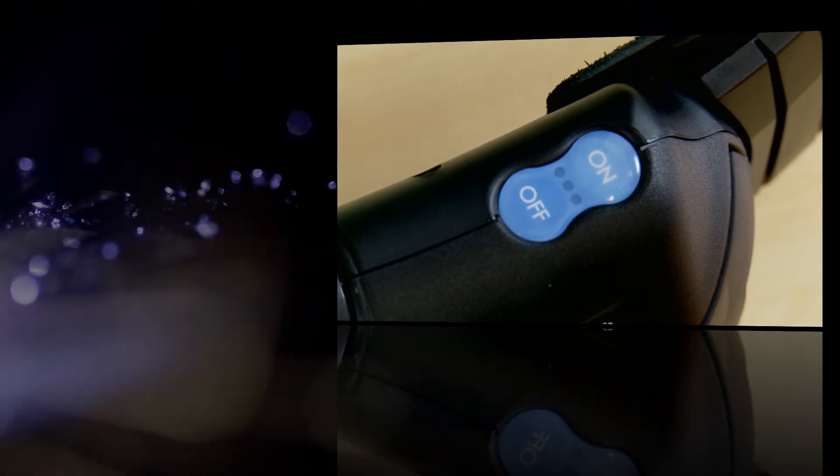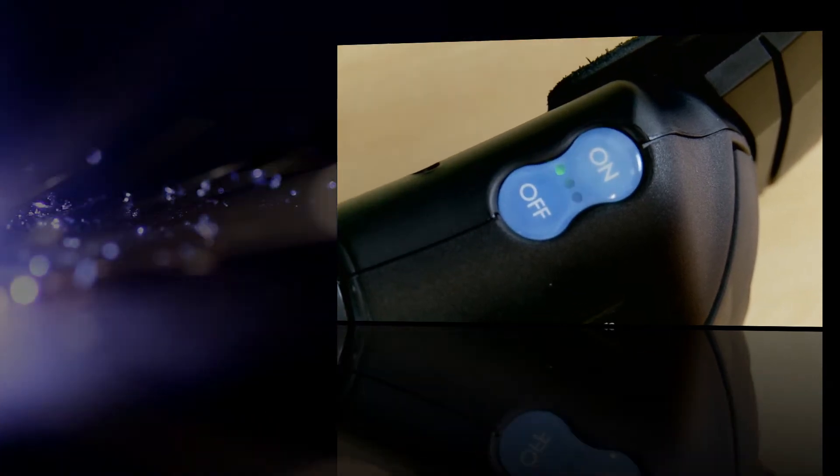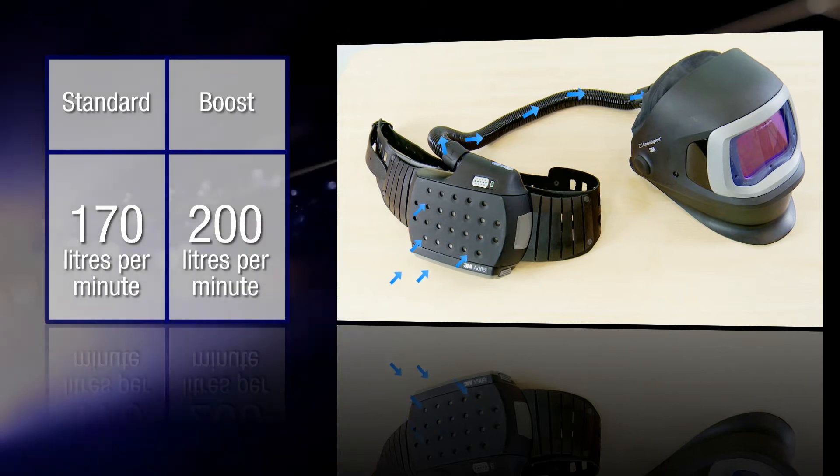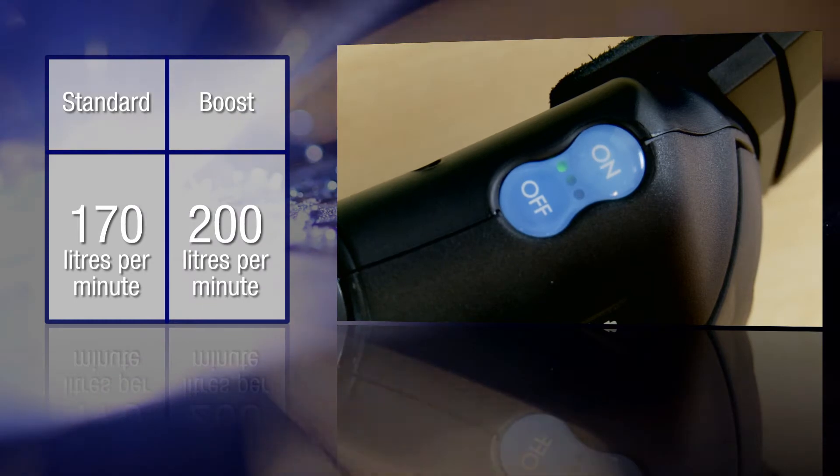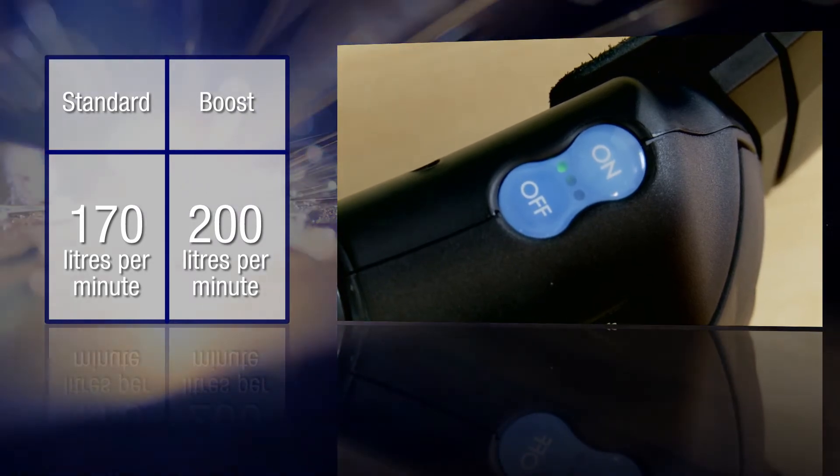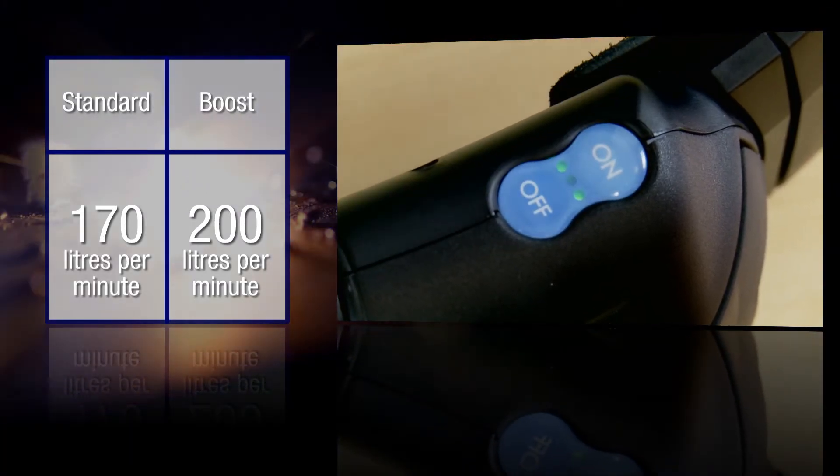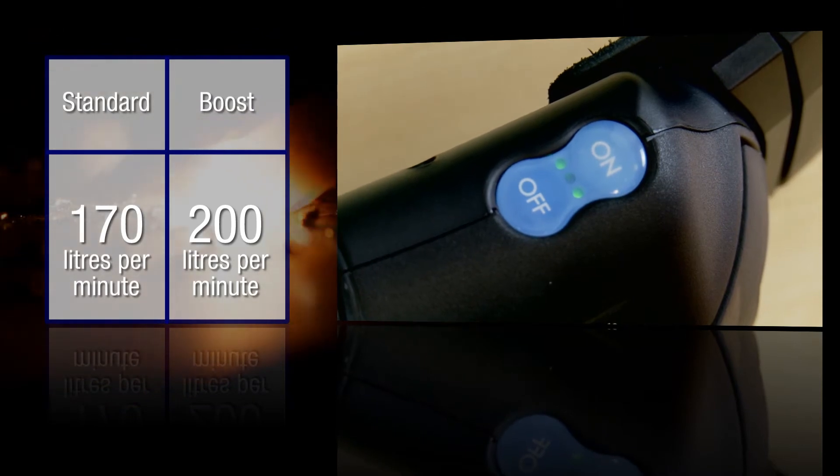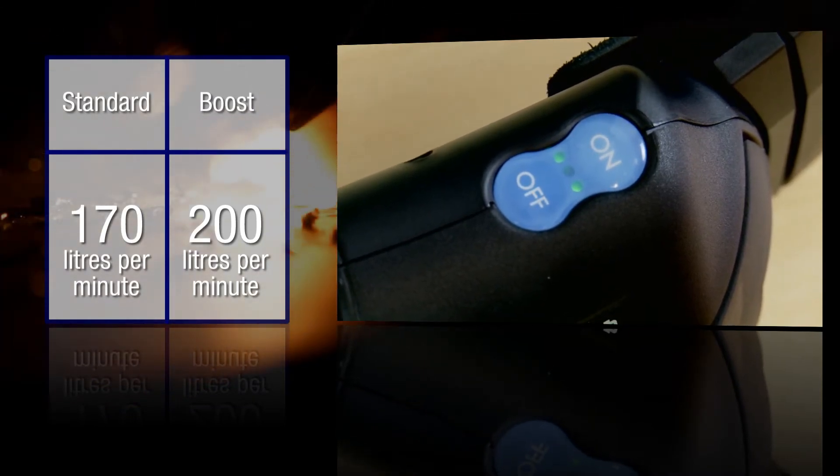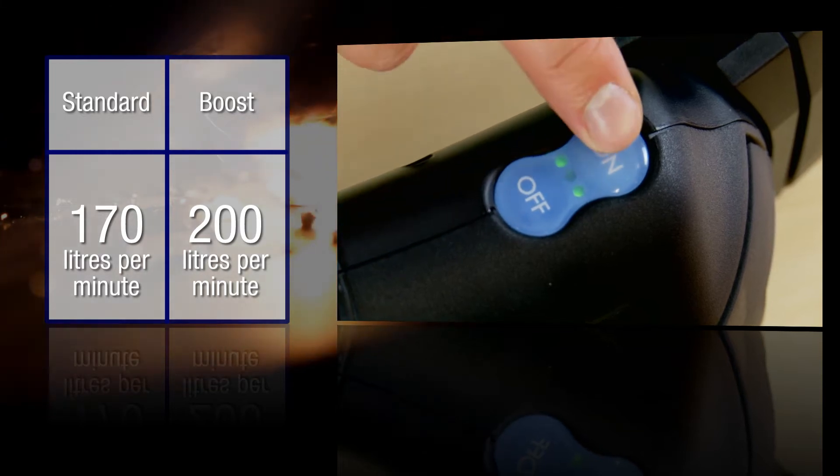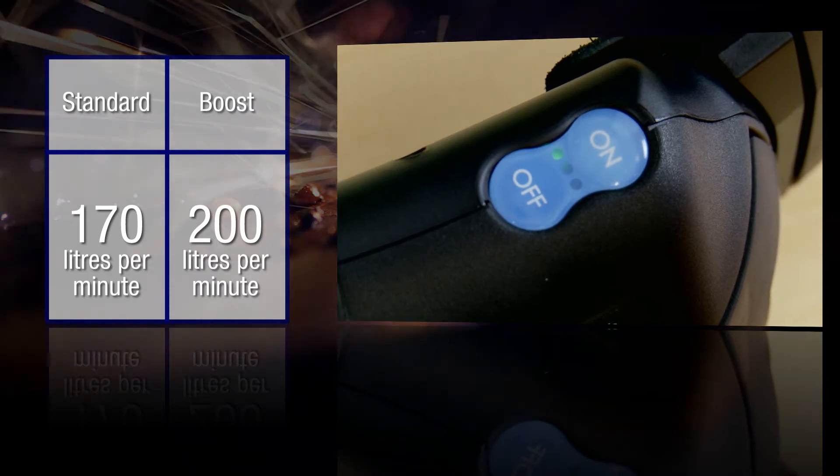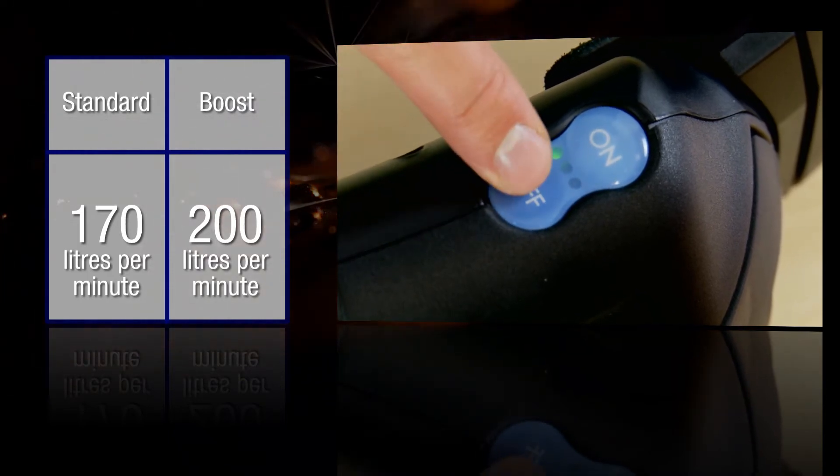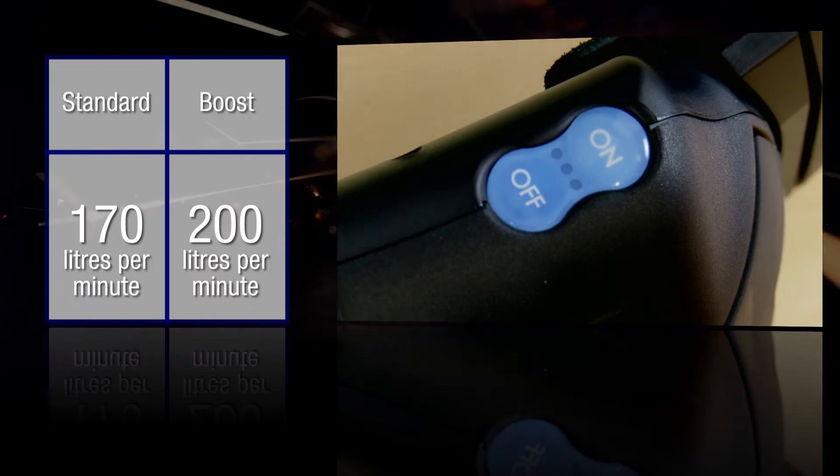The AdFlo has two airflow settings. Push the on button once to start the airflow. The first green light will show on the on-off panel. This setting delivers approximately 170 litres of air per minute. For increased comfort, you can increase the airflow to approximately 200 litres per minute. This is done by pressing the on button a second time. When in the boost mode, there will be two green lights on the on-off panel. To reduce to normal airflow, you simply push the button again for the third time and one of the green lights will go out. Press and hold the off button to turn it off.